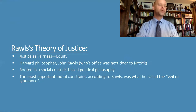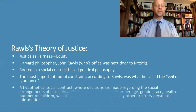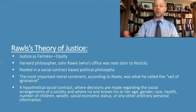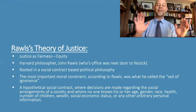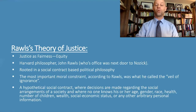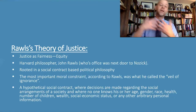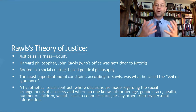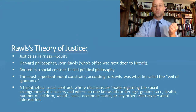That veil of ignorance is crucial for Rawls's theory of justice. Rawls designed a hypothetical social contract where decisions regarding social arrangements in one's society were made behind the veil of ignorance. On this view, no one really knows their age, race, gender, health, how many children they have, their wealth, their socioeconomic status, or any of the other arbitrary personal pieces of information that might sway us when designing what an ideal or just society might be like.